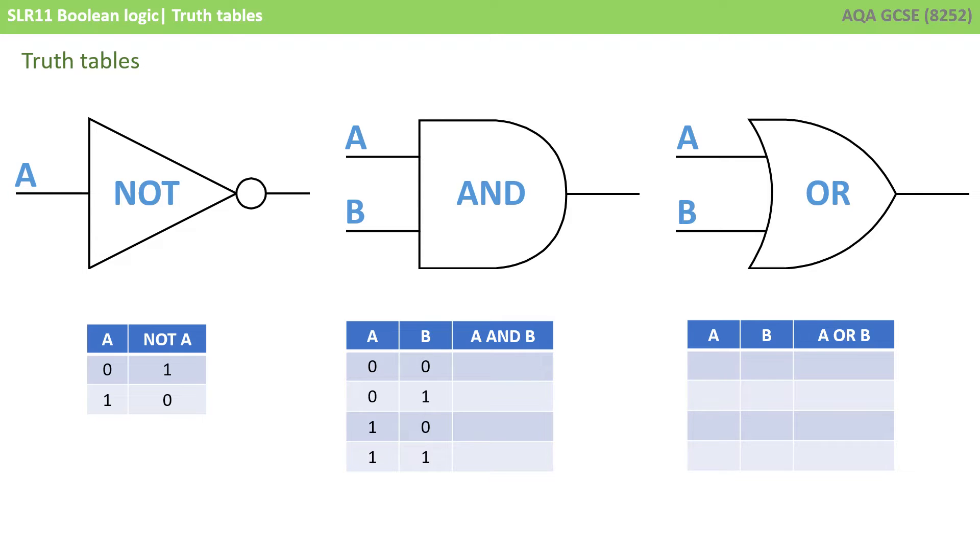With an AND gate we've got two possible inputs, so we've got two columns here called A and B, and that means we need more rows in our truth table because there's more combinations. We could input two 0s, a 0 and a 1, a 1 and a 0, or two 1s. And the final column is the output, which is the result of A and B.